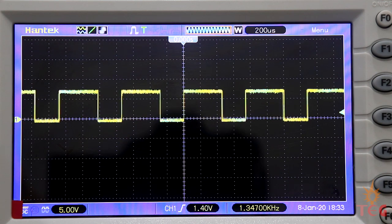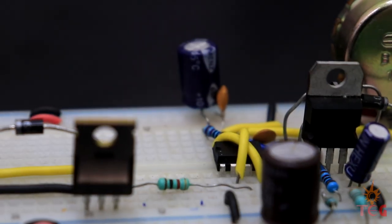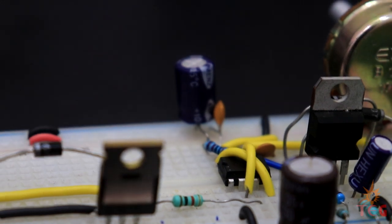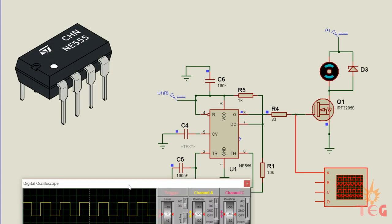The speed controller here generates the PWM wave by using a 555 timer IC. This IC provides the required variable voltage at the gate of the MOSFET by working in its astable mode.